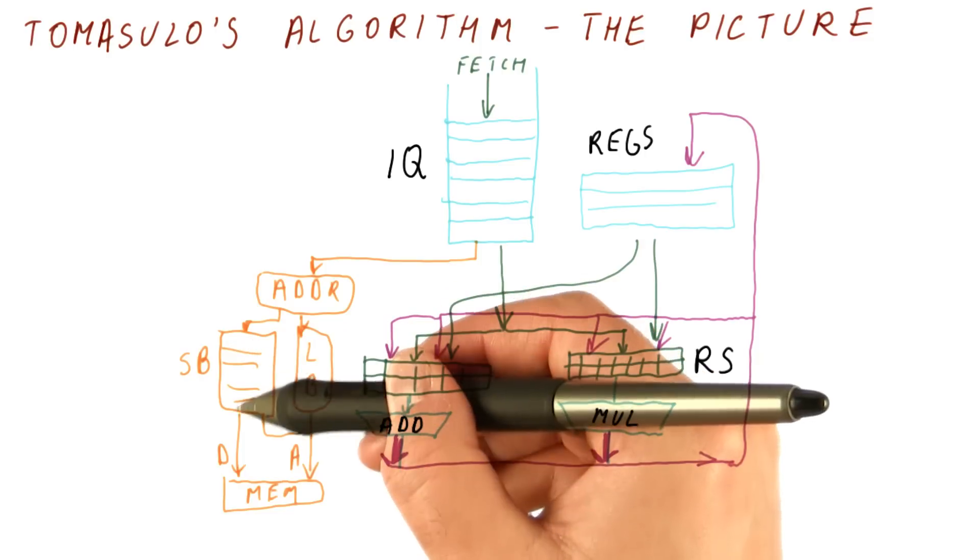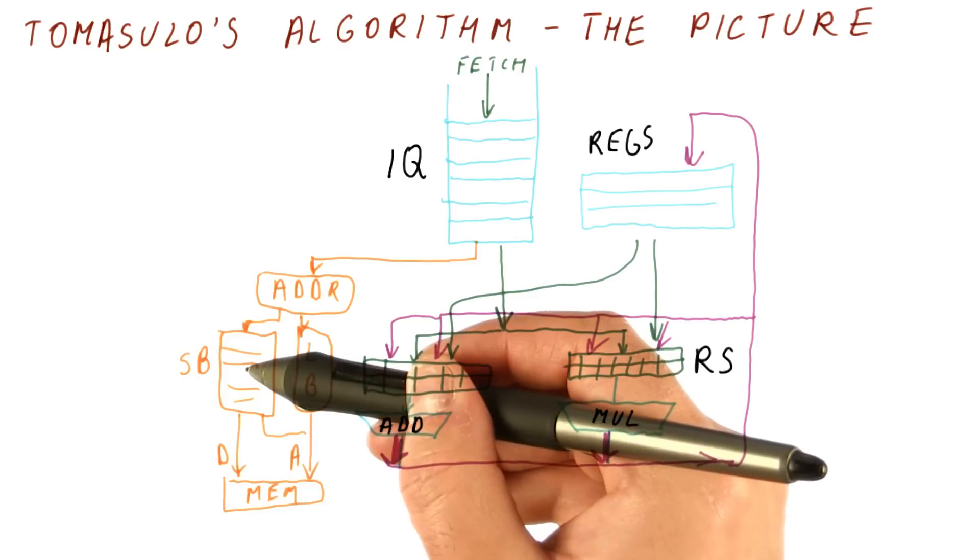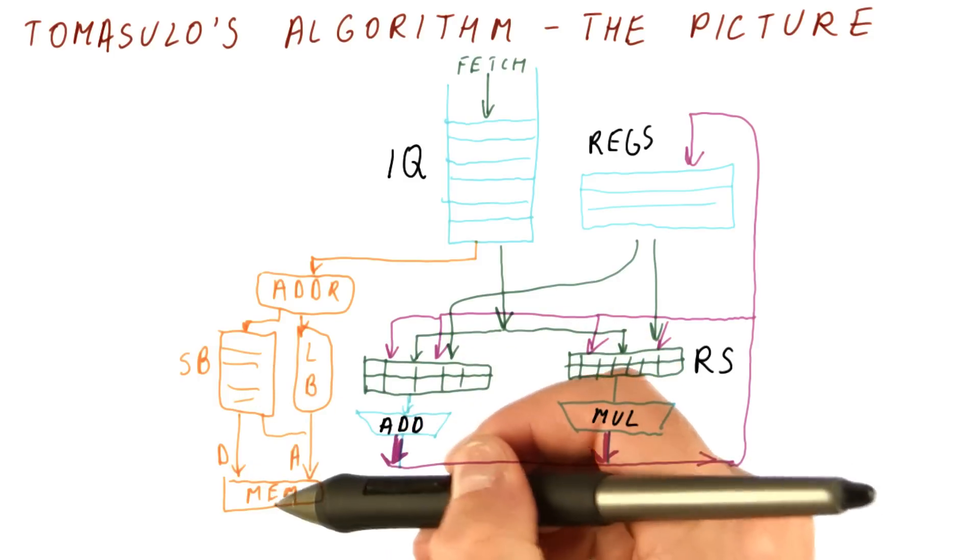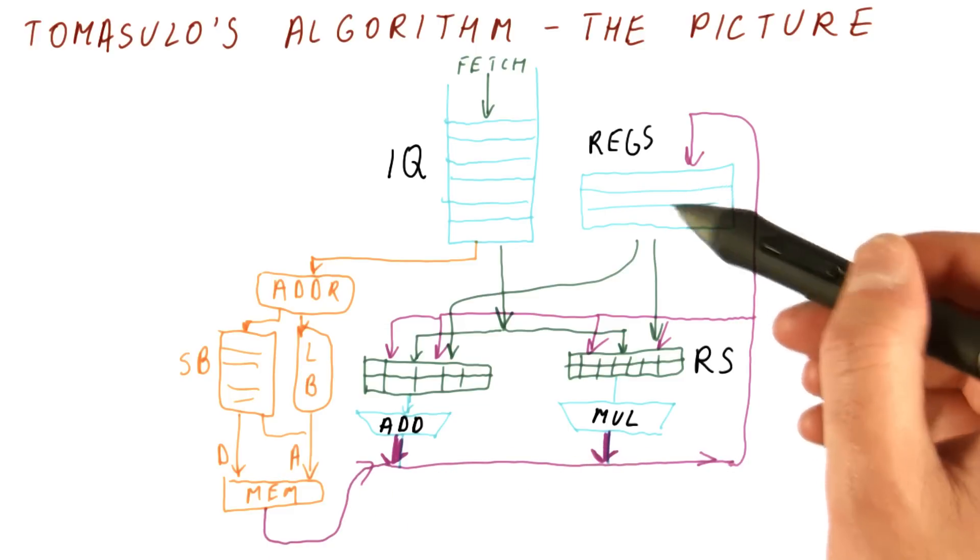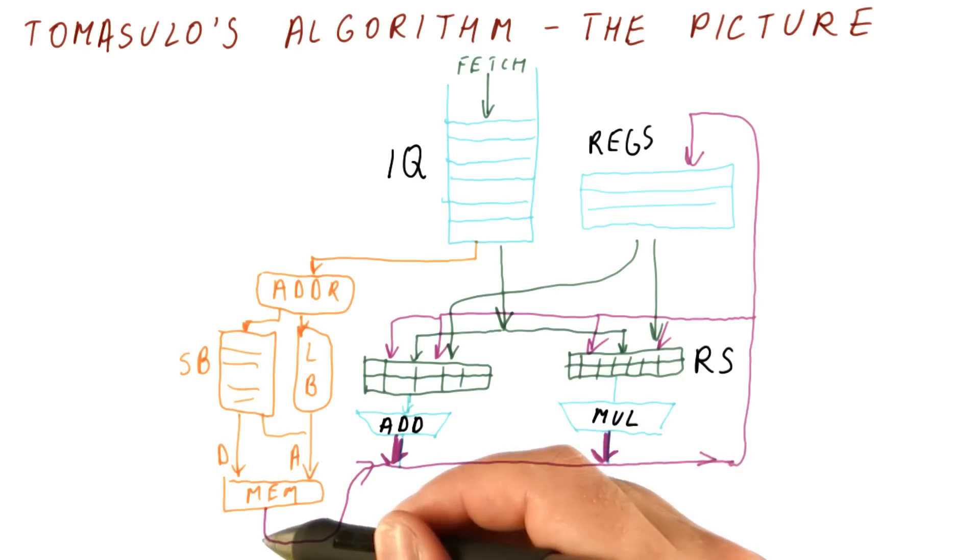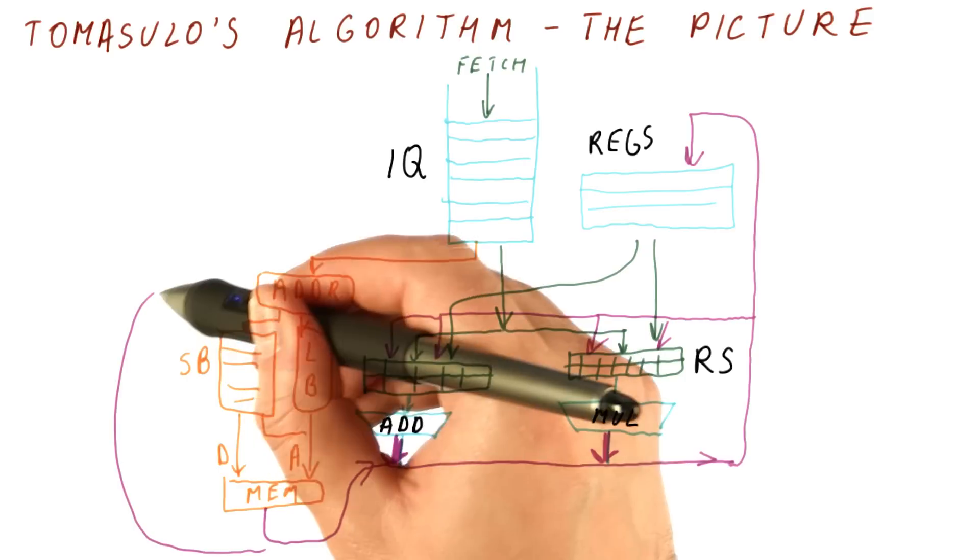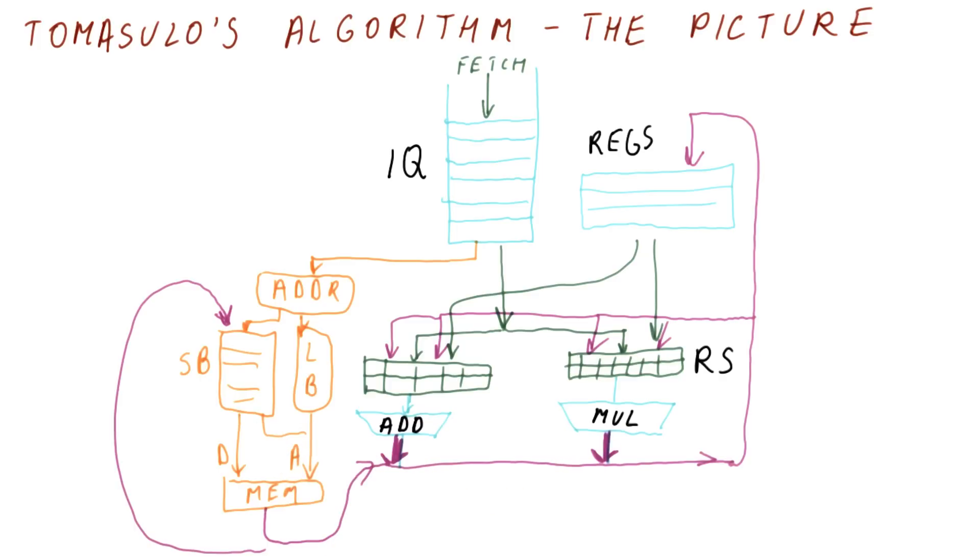The instructions are queued up here for going to memory. The load buffer only provides the data address. The store buffer provides both the address and the data to memory. When a load comes back from memory, its value is also broadcast on the CDB and goes to the appropriate register. Also, all the values that are broadcast from the bus are going to go here so that stores can get their values when they become available.